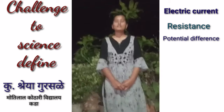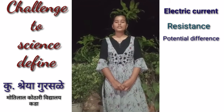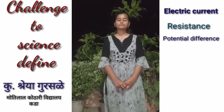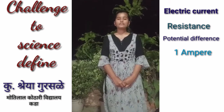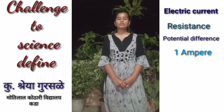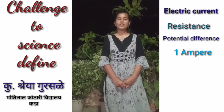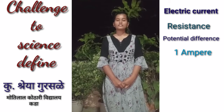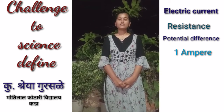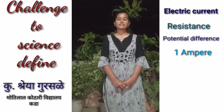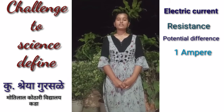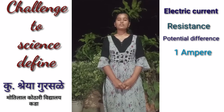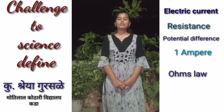The fourth definition is one ampere: if one coulomb of charge flows through a unit cross-sectional area of a conductor in one second, then the current in the conductor is called one ampere.